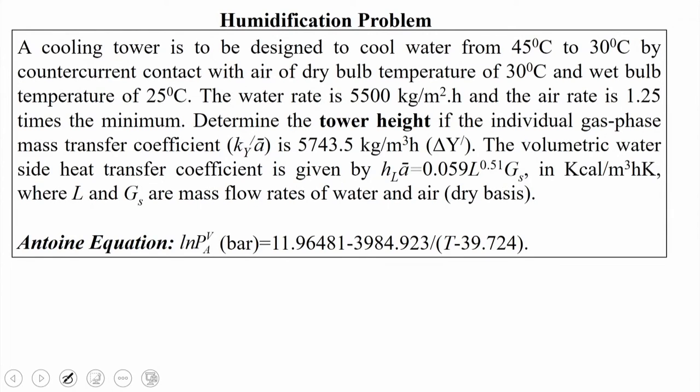The problem is: a cooling tower is to be designed to cool water from 45°C to 30°C by counter-current contact with air of dry bulb temperature 30°C and wet bulb temperature 25°C. The water rate is 5500 kg per meter squared hour and the air rate is 1.25 times the minimum. Determine the tower height if the individual gas phase mass transfer coefficient KY' prime is 5743.5 kg per meter cube hour.